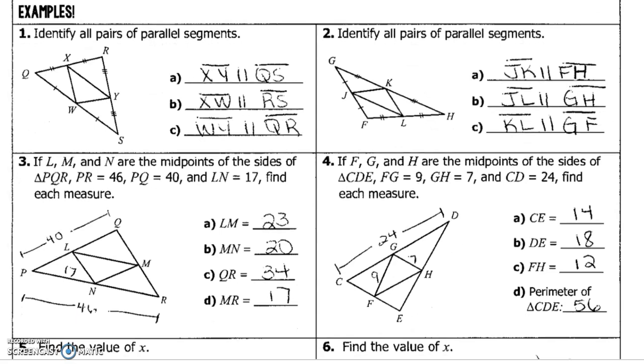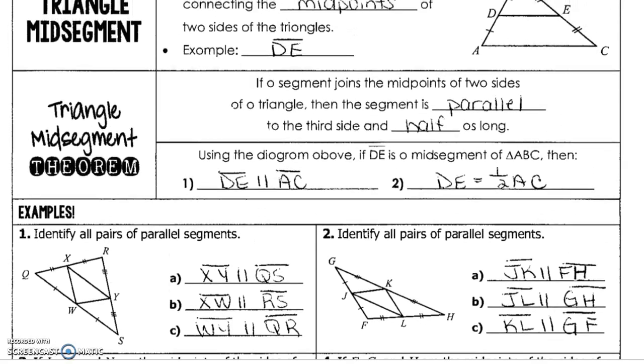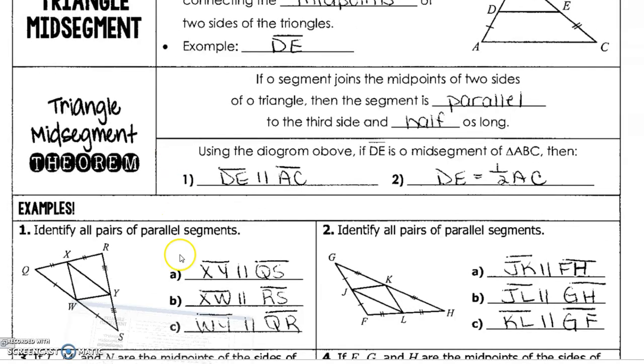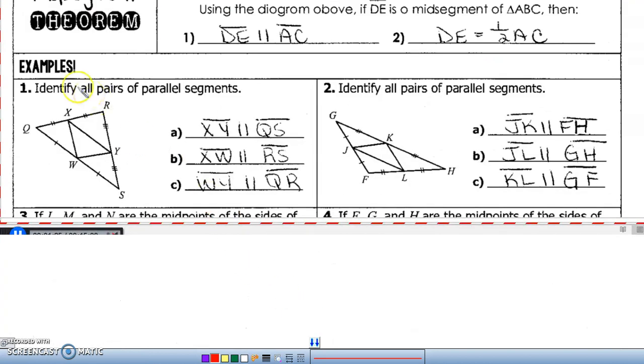Alright, so let's look at a couple examples. Let's look at the first two. It says identify all the pairs that are parallel segments, but notice what they did. They put a triangle within the triangle. So let's look at this line, XY, it is parallel to its base, QS.